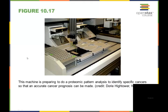This machine is preparing to do proteomic pattern analysis to identify specific cancers so that an accurate cancer prognosis can be made. Commonly when a person does have cancer and they take a biopsy, they will look at the genetics of that tumor to help in the diagnosis and in some cases be able to plan to give a specific treatment that's going to target exactly where the genetics have gone wrong in that cell.